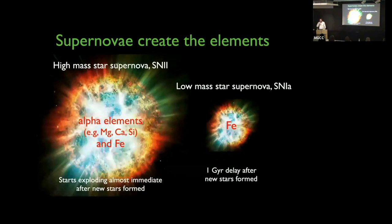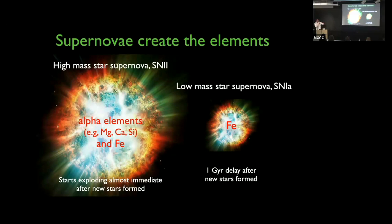I'll be talking about alpha abundances. The alpha elements — magnesium, calcium, silicon — are created through the alpha ladder, by adding helium nuclei in the cores of very massive stars, and through subsequent supernova explosions. The two relevant supernovae are Type II — from massive stars collapsing at the end of their very short lives — and Type Ia. Massive stars are born, live very quickly, and explode after just a few million years.